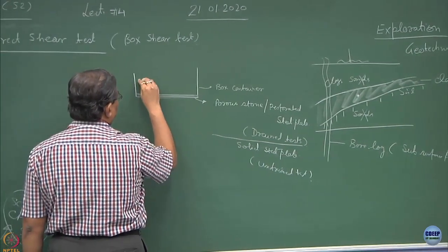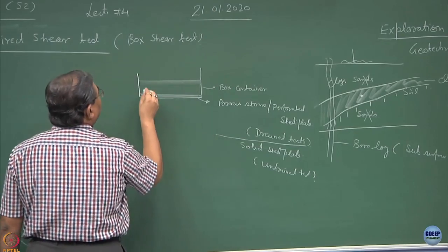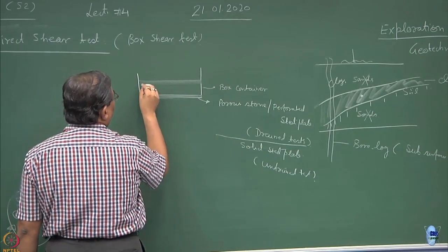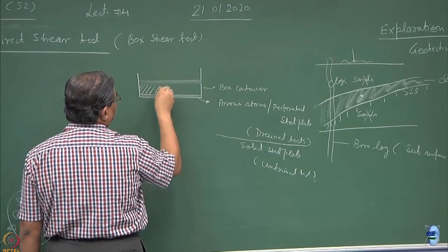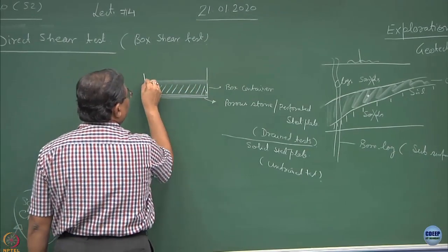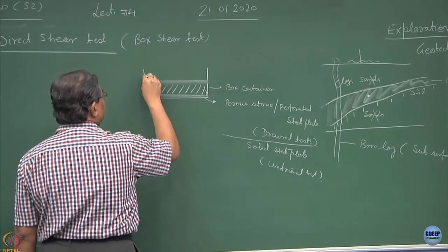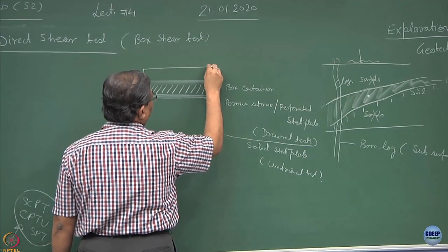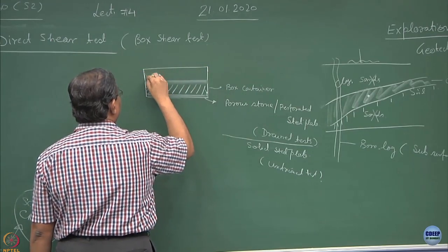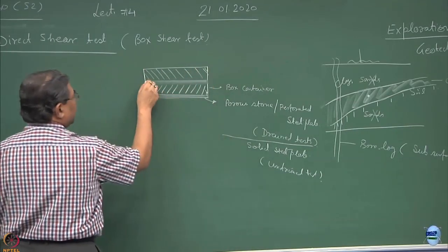This is one half of the sample. This is the cleavage plane along which the shearing is going to take place. This is the another half of the sample, we call this as the plane of shearing.